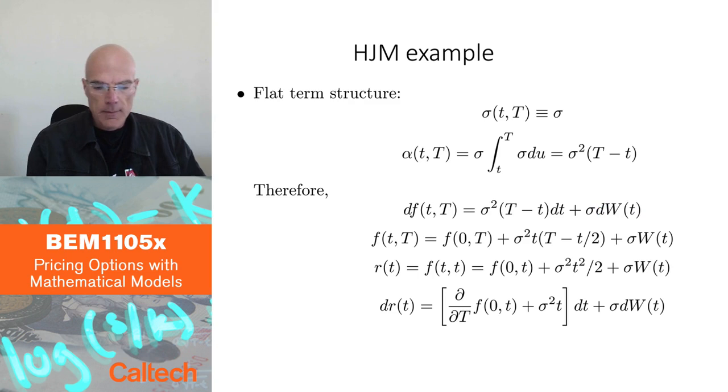Now I'm going to integrate this because I will need it next. When I integrate, f(t,T) is f(0,T), just the initial condition, plus integral of this. This is easy to integrate. If you integrate, the first term is constant, so I get just times t. Integral of this is t squared over 2, so I get minus sigma squared t squared over 2.